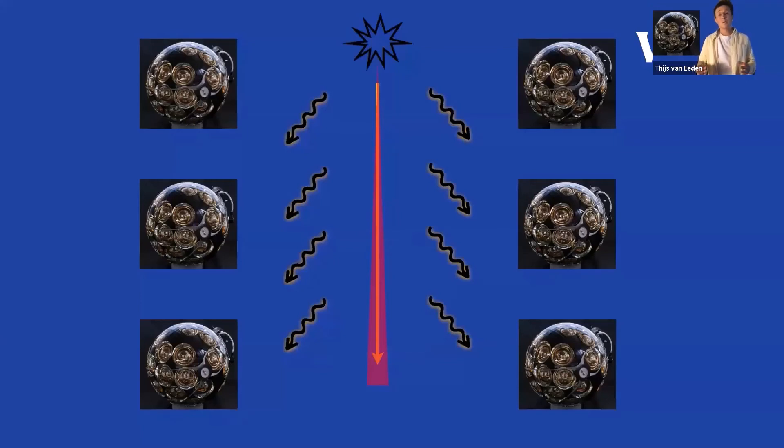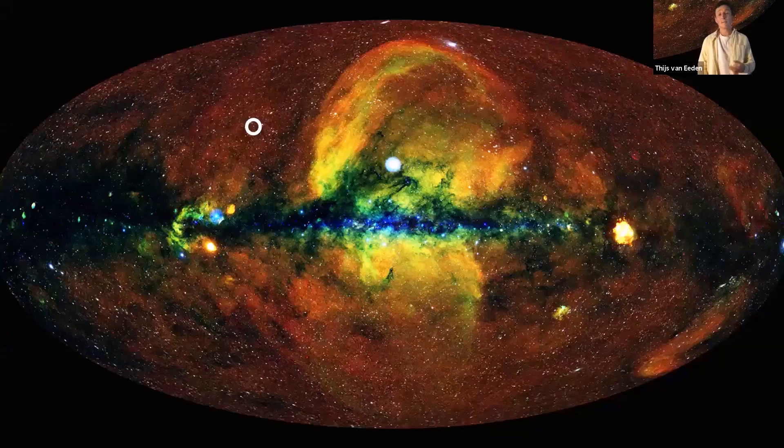In our detector, we can actually pinpoint the direction of particles like this. And the key to that are those simulations that I talked about. The better we understand particles in our detector, light, and everything that happens in our water there, the better we can make this translation from light to a direction.